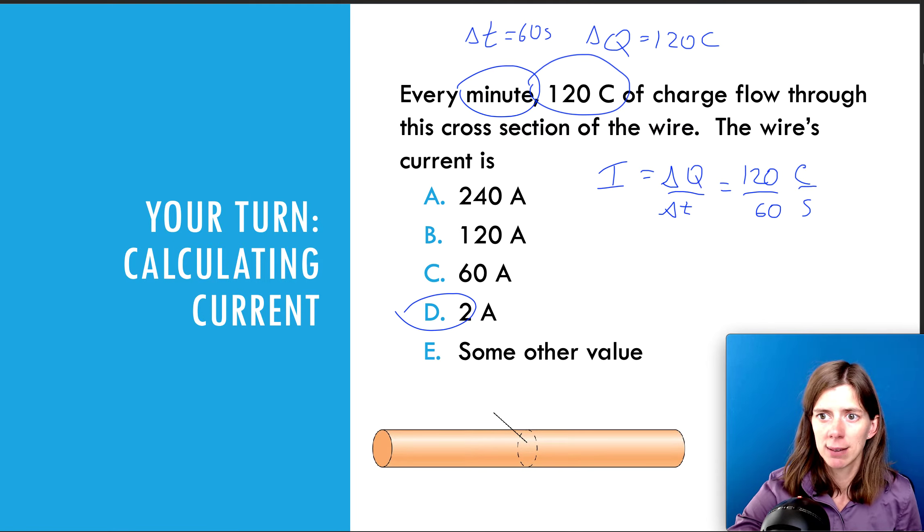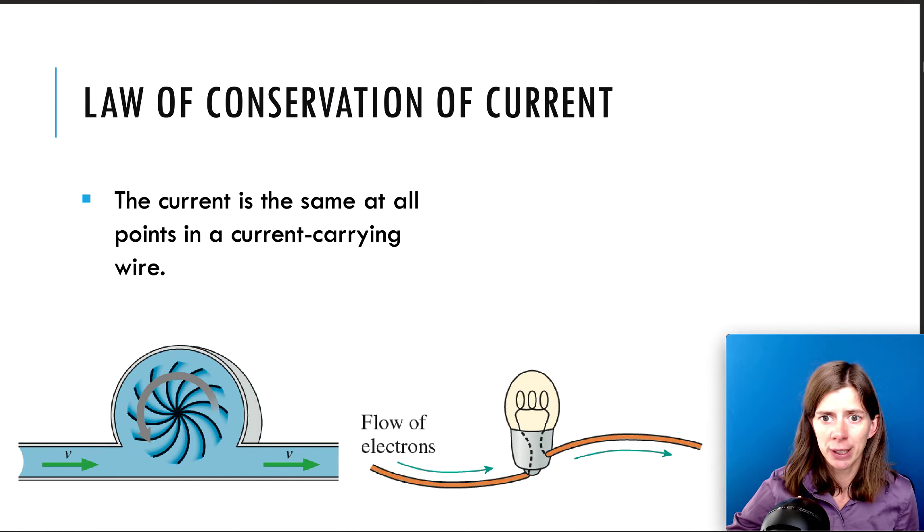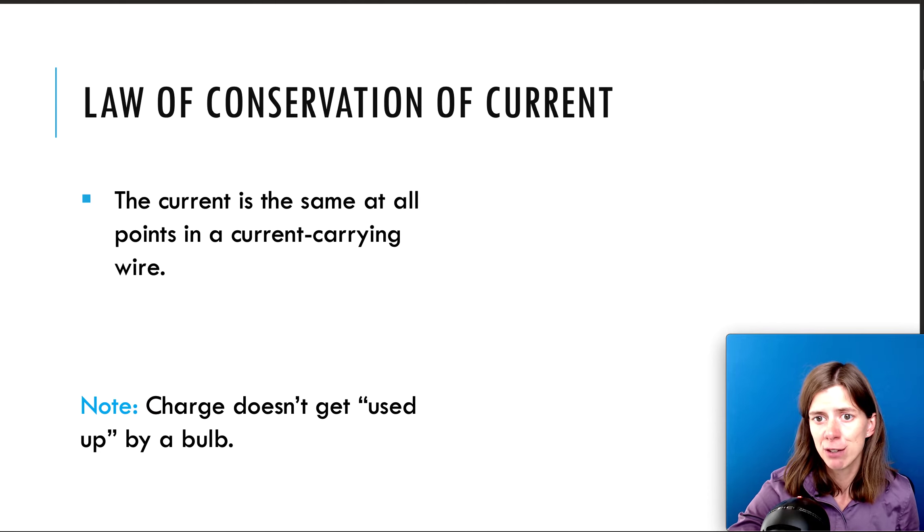Let's look at the next part here. The law of conservation of current. So, this basically answers the question about the Christmas lights. But if you have a water turbine here, you can see the water entering. And then it flows through the turbine. And then the same amount of water leaves the turbine as the amount of water that entered. So, it's the same thing with your current or your flow of charges. As the charges flow through a light bulb, the same number of charges is going to flow out of the light bulb. So, what we're saying with the law of conservation of current is that charge does not get used up by a bulb. The total amount of charge stays constant.